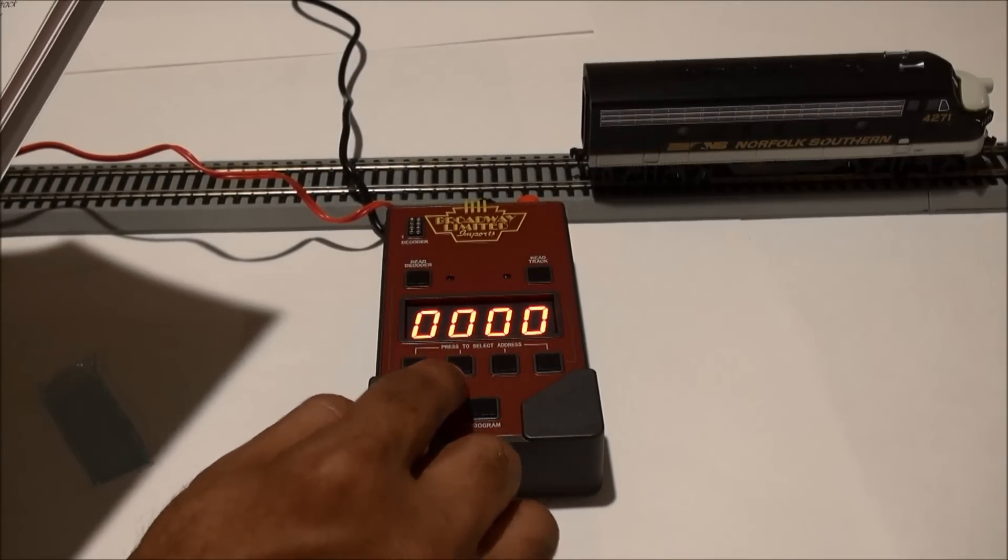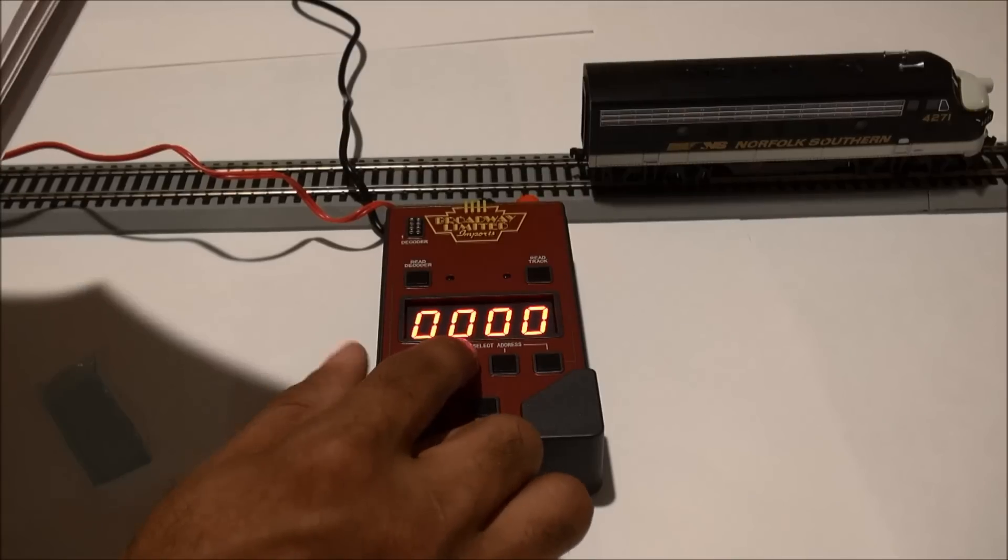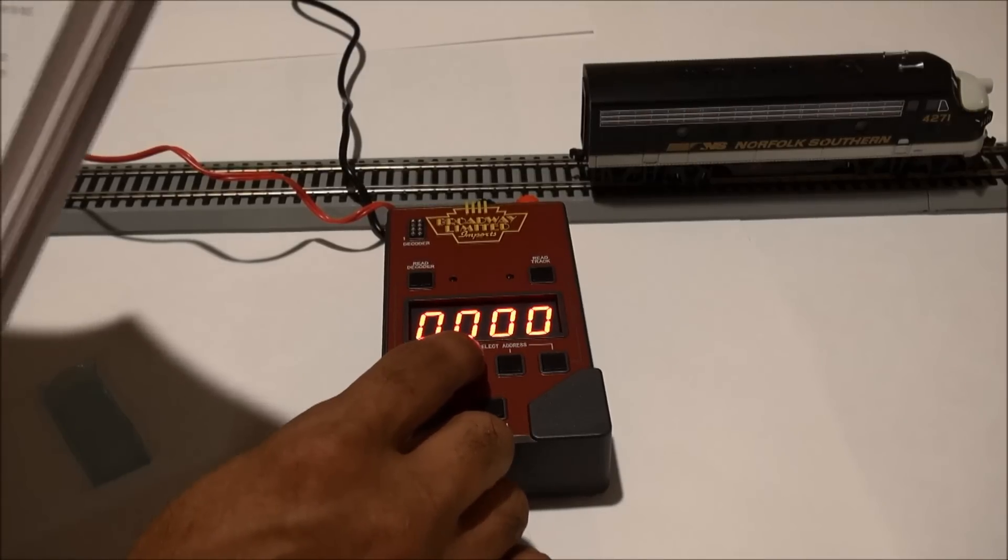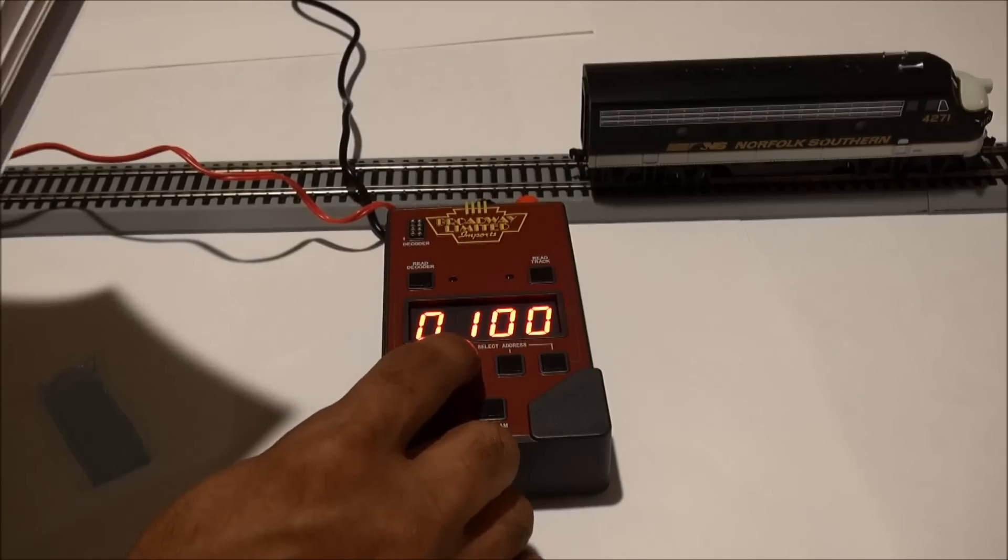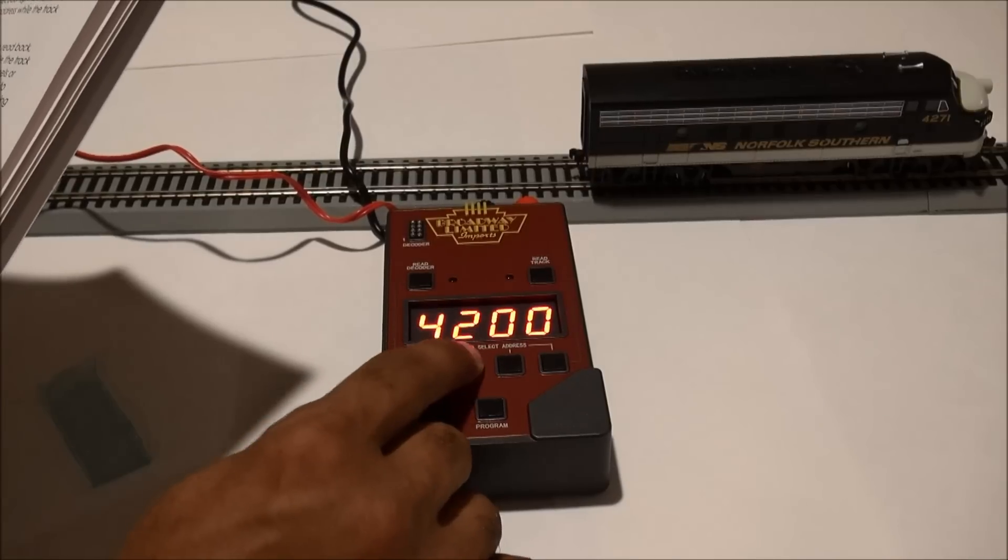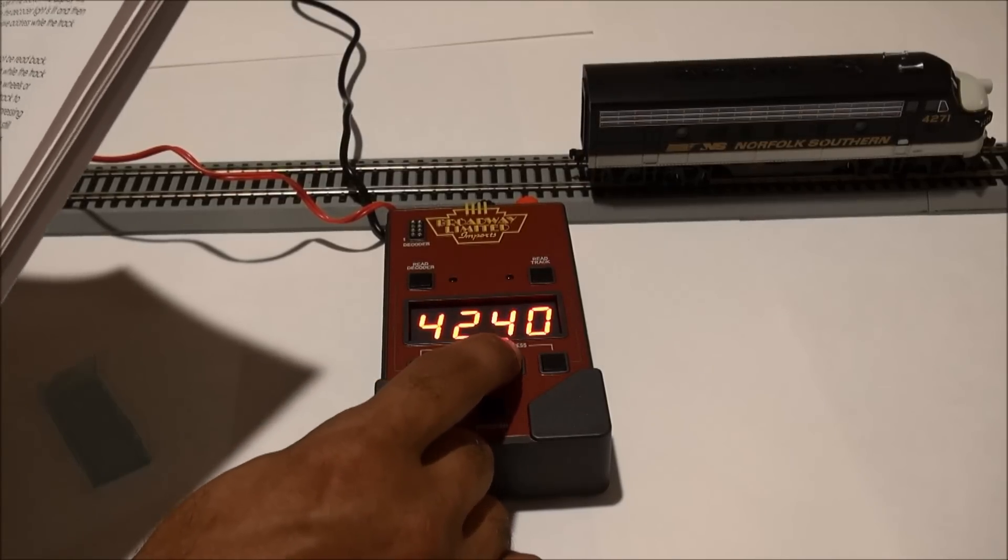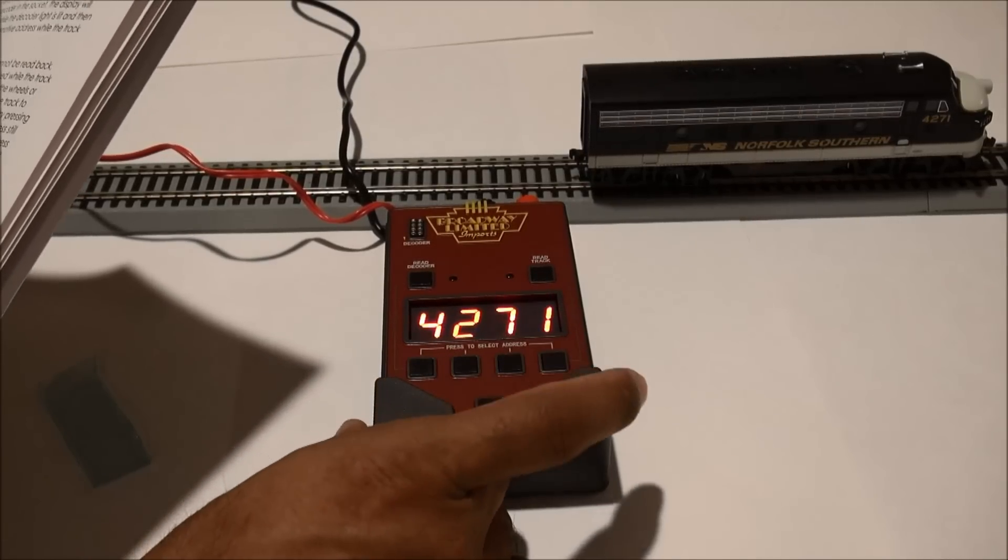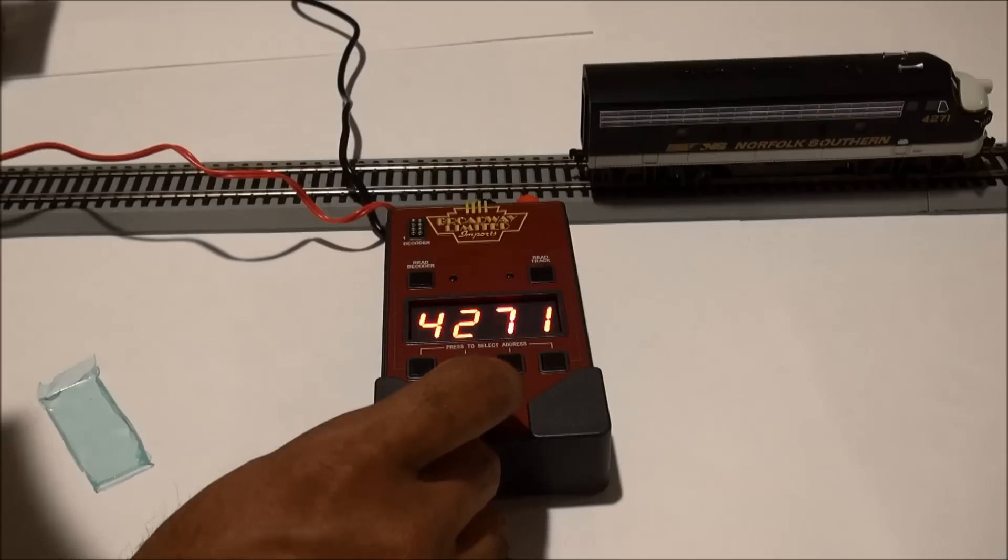Now when you're going to put an address, you want to press to select the address. You hit this button right here. I actually did that by accident without it recording, but now you can start moving numbers. So let's go ahead and move this one up to 4, 2, 7, 1.